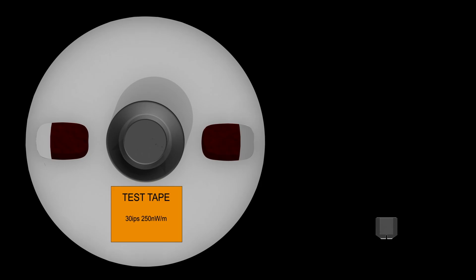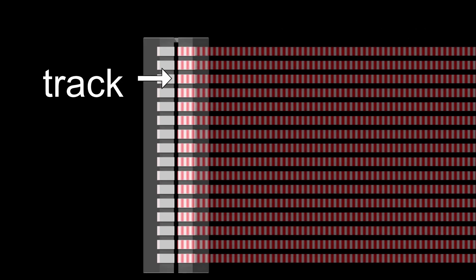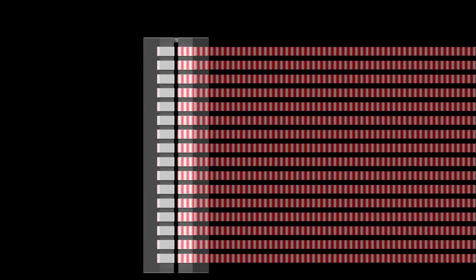Most test tapes are full track or mono. Standard multi-track recordings record audio on equally spaced sections of the tape called tracks. These tracks are separated by unrecorded zones called guard bands. The guard bands serve to reduce audio bleed between adjacent channels.